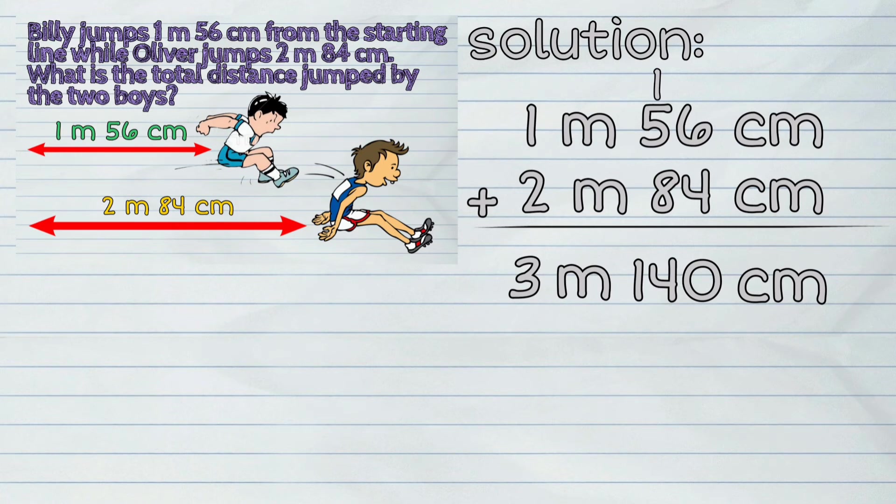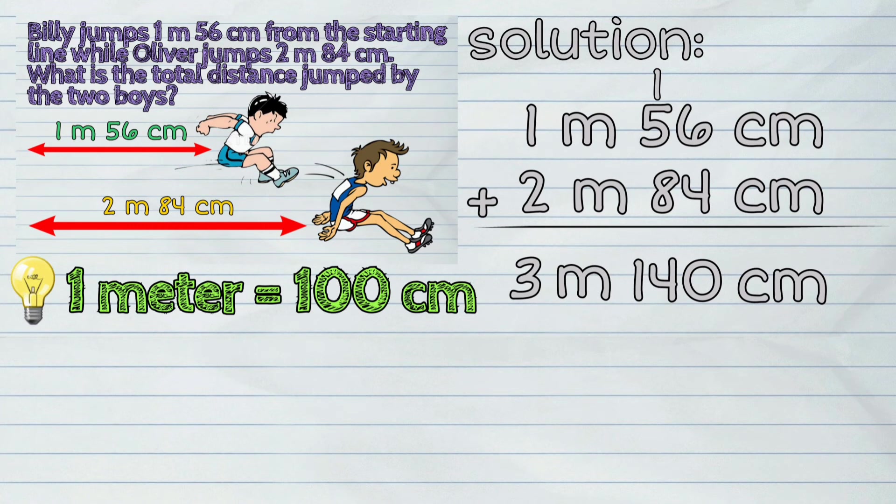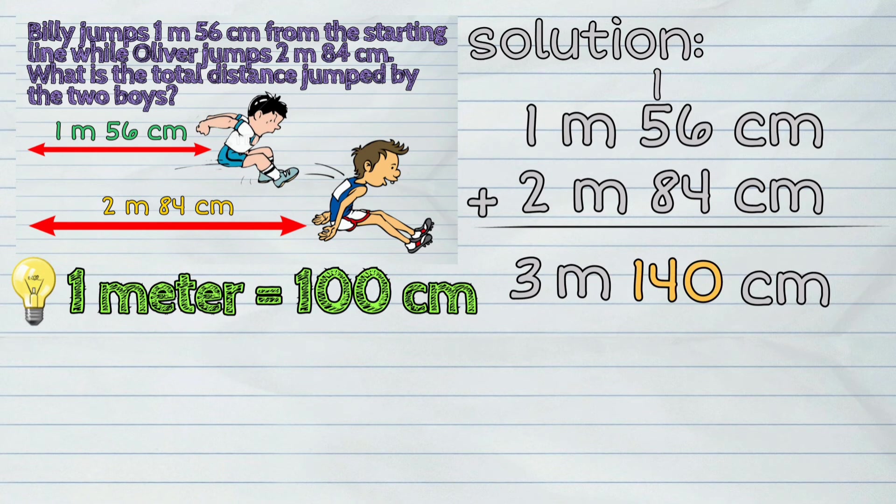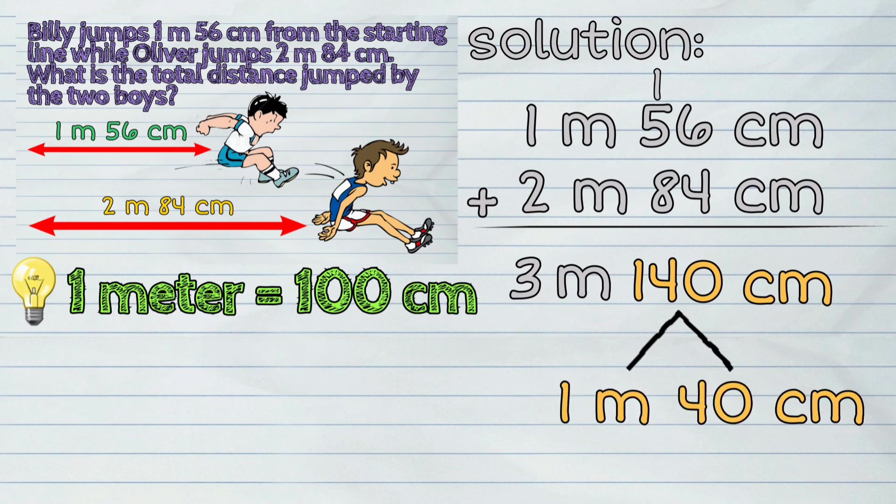However, since 1 meter is equal to 100 centimeters, we will regroup 140. 140 centimeters is equal to 1 meter and 40 centimeters.